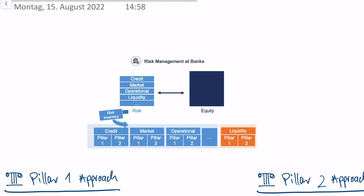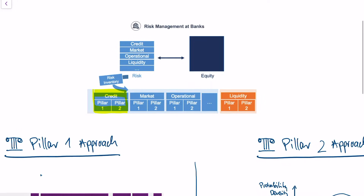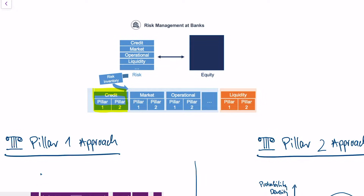Today we're talking about credit risk, which is the most important risk type for most traditional banks. As covered in the Basel III video, most banks need to use two approaches to calculate their risk. Those approaches are called Pillar 1 and Pillar 2 — that's just how it's called in the Basel III regulation. Today we're going to cover both approaches, and you will see why both approaches exist.